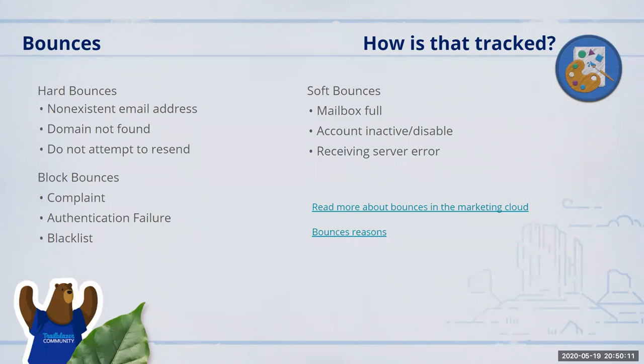Bounces are very important and often overlooked inside marketing in general. Let's talk about the different types of bounces and how they are tracked inside Marketing Cloud. First, hard bounces — these are email addresses that don't exist, domains that don't exist, or send attempts where the server is non-existent or not real. Hard bounces are immediately scrubbed from your subscriber list at time of send if you're using All Subscribers to maintain your bounces. Do not attempt to resend to these. If you do, it will affect your deliverability and inbox placement.